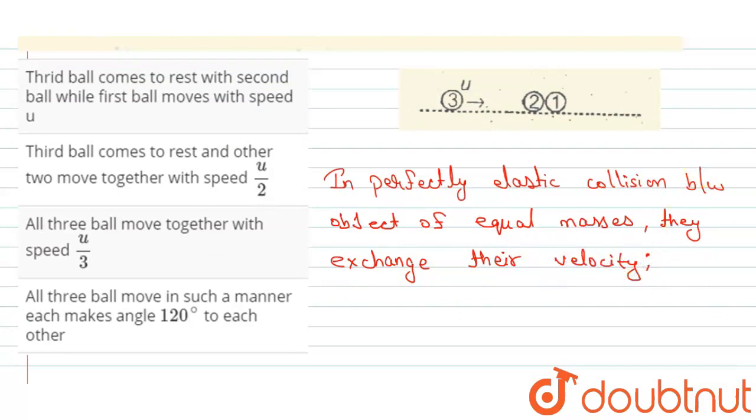So it means the velocity of third ball is exchanged with velocity of second ball. Here the velocity of third ball u is exchanged with velocity of second ball.